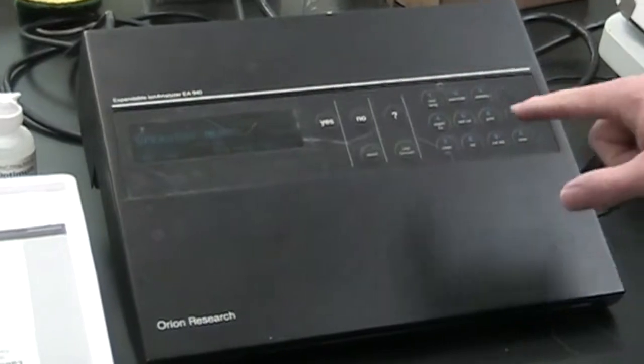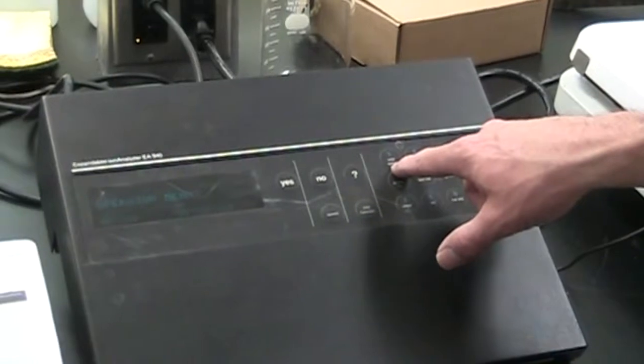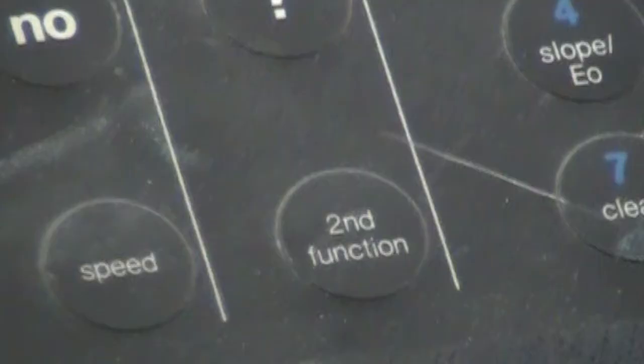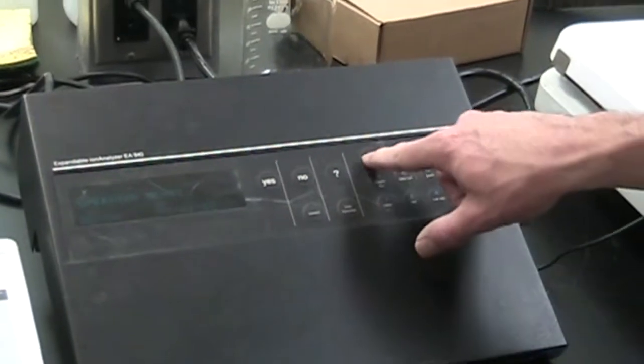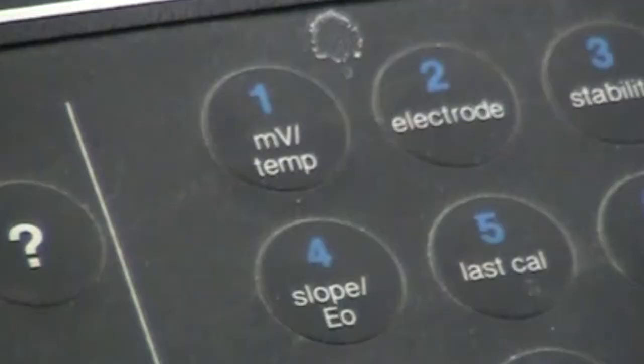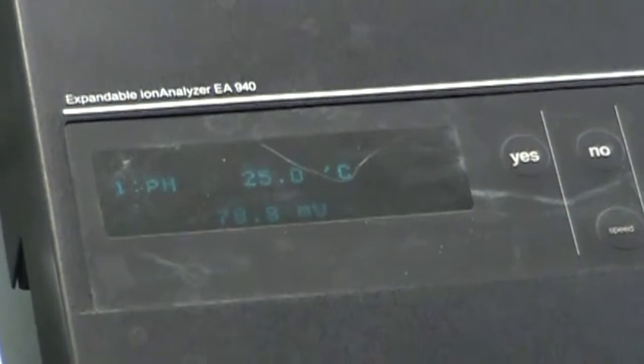All we're going to do is switch to millivolt. You see millivolt temperature is the white writing on the number one button, and white is the second function. So you're simply going to press second function, and then the one or the millivolt temp, and we get a reading in millivolts. You can ignore the fact that it says pH. The millivolts is going to be the data.